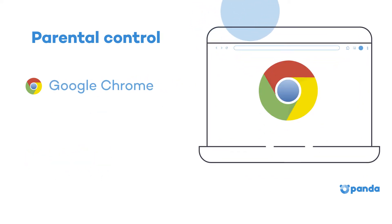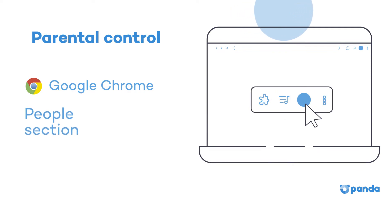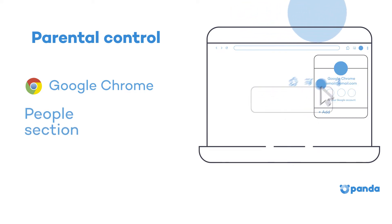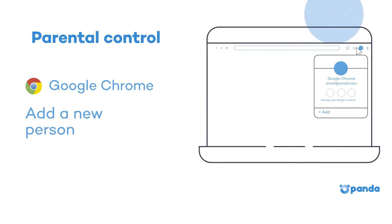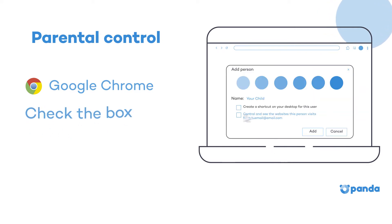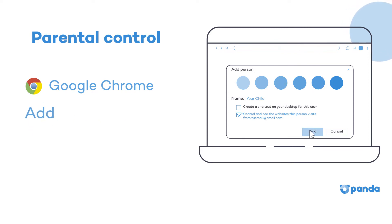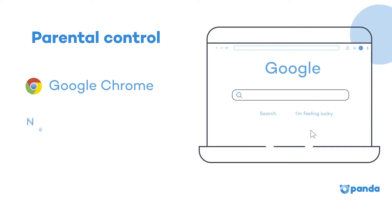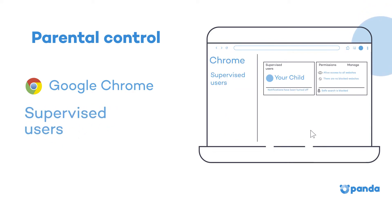Google Chrome. Open your Google Chrome settings and go to the People section. Add a new person and check the control and view boxes — that way you will see the websites they visit from your profile. Click Add and a new Chrome window will open. Lastly, select the Supervised Users Dashboard then click on My Child to finish setup.